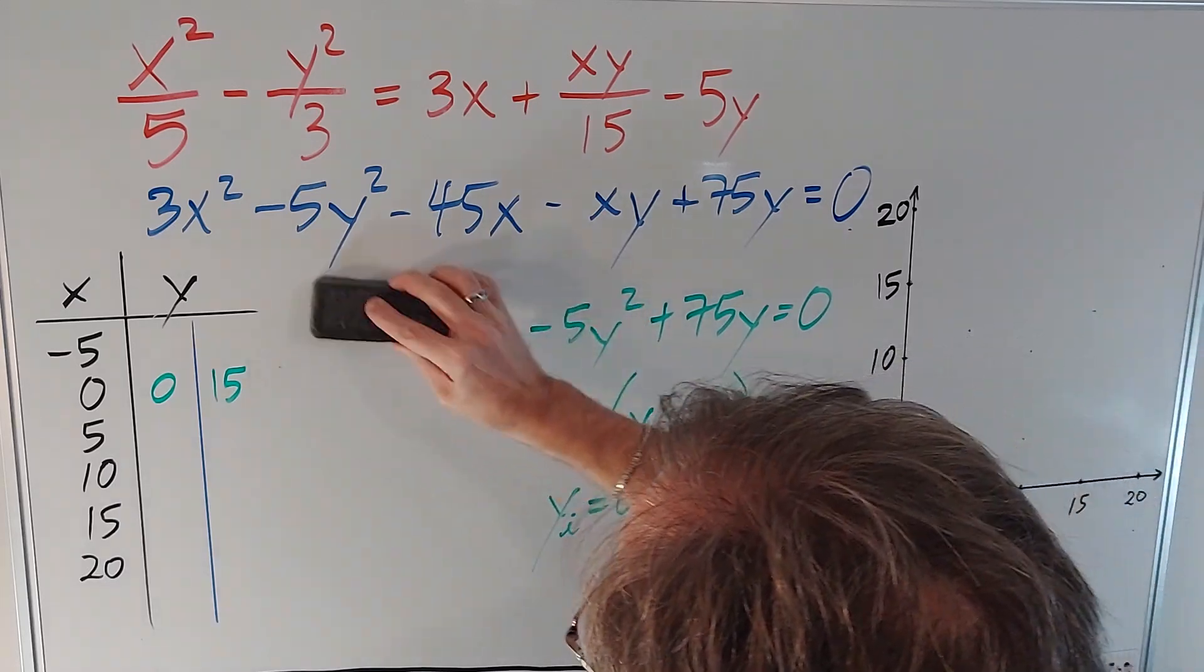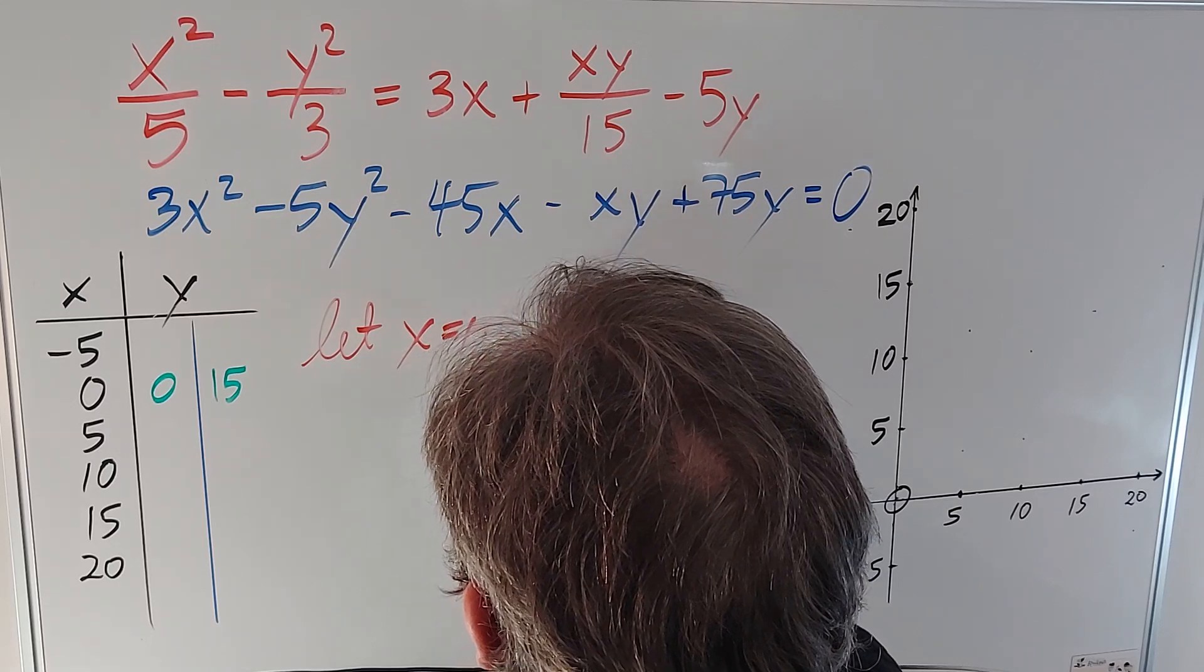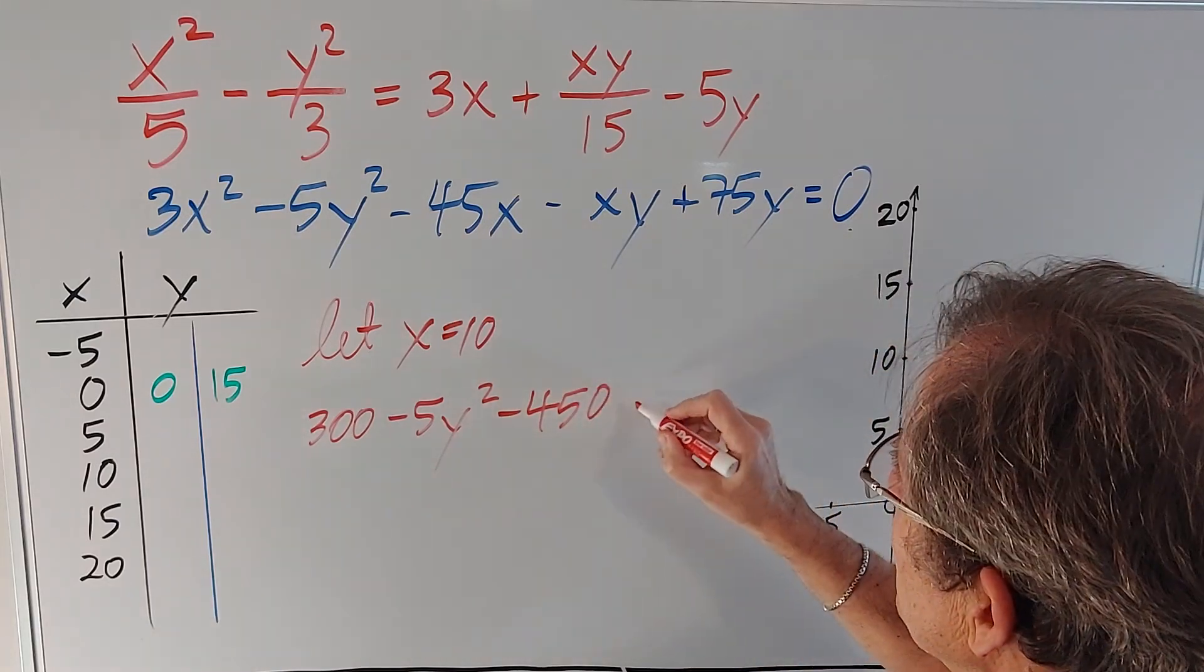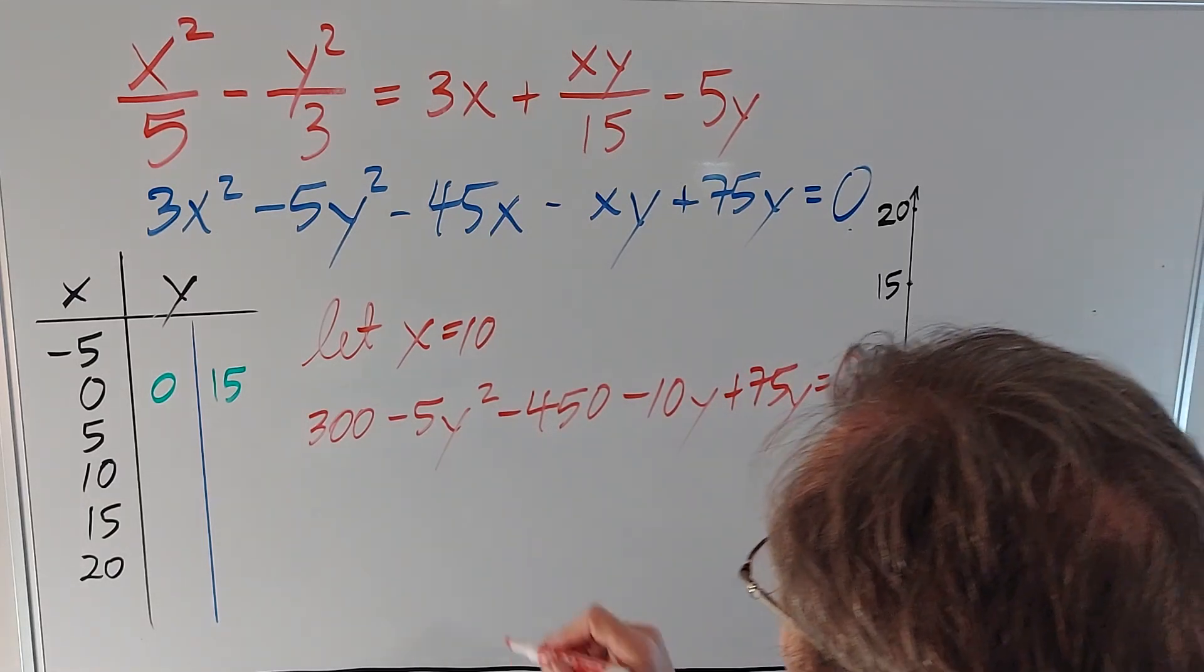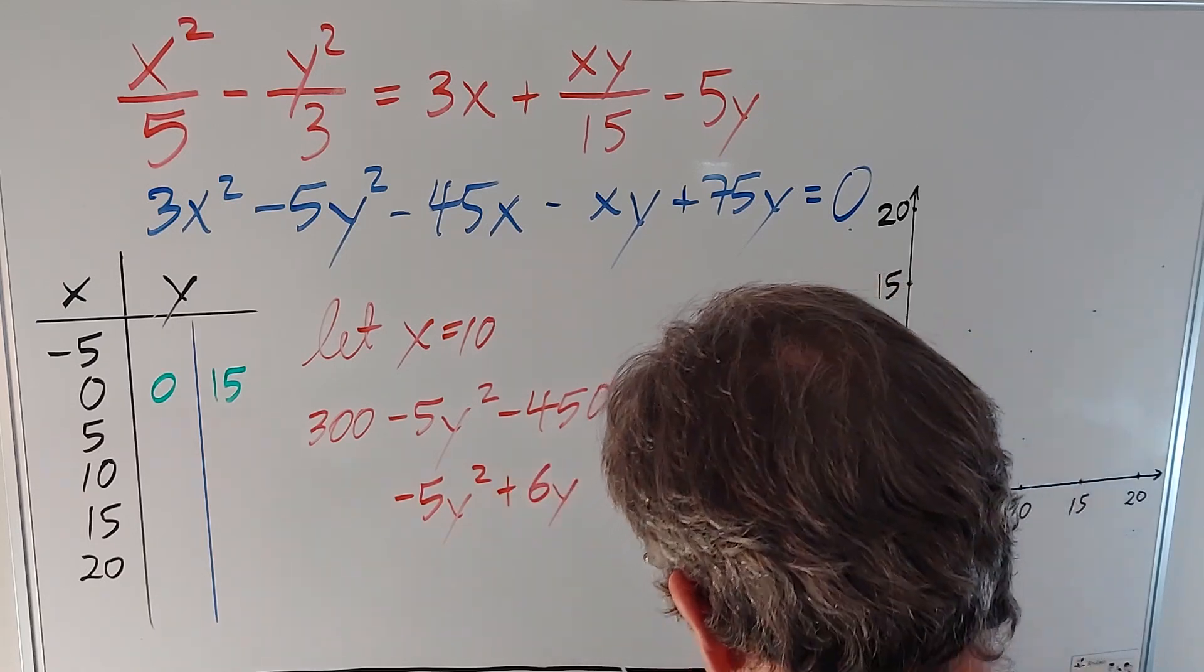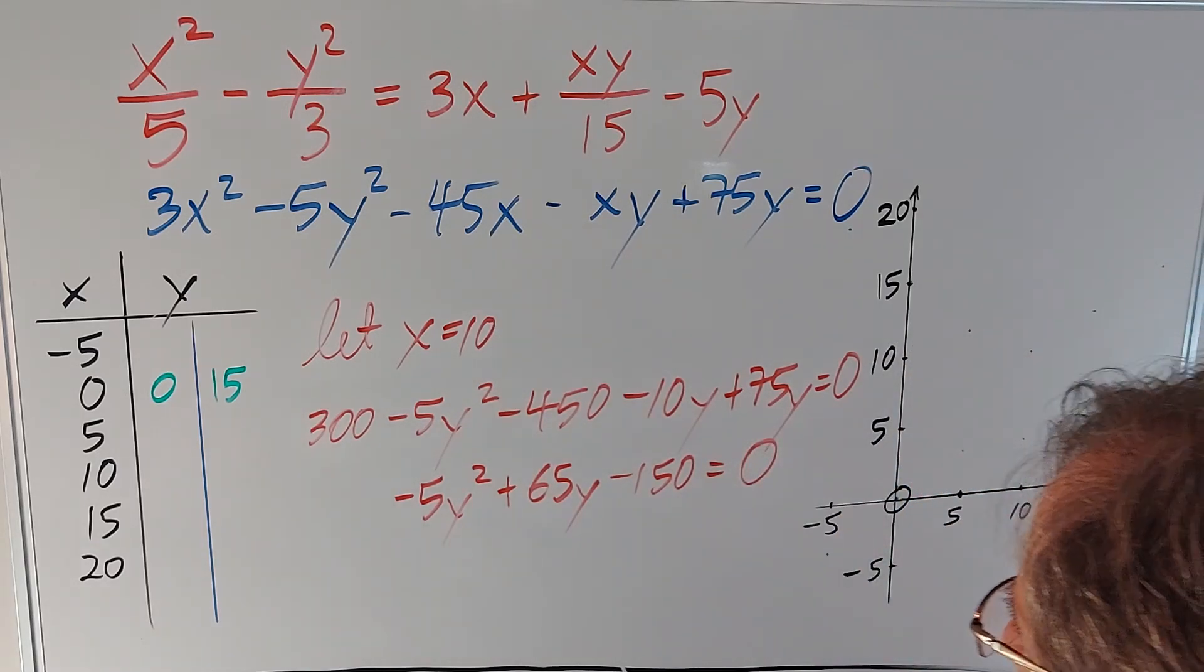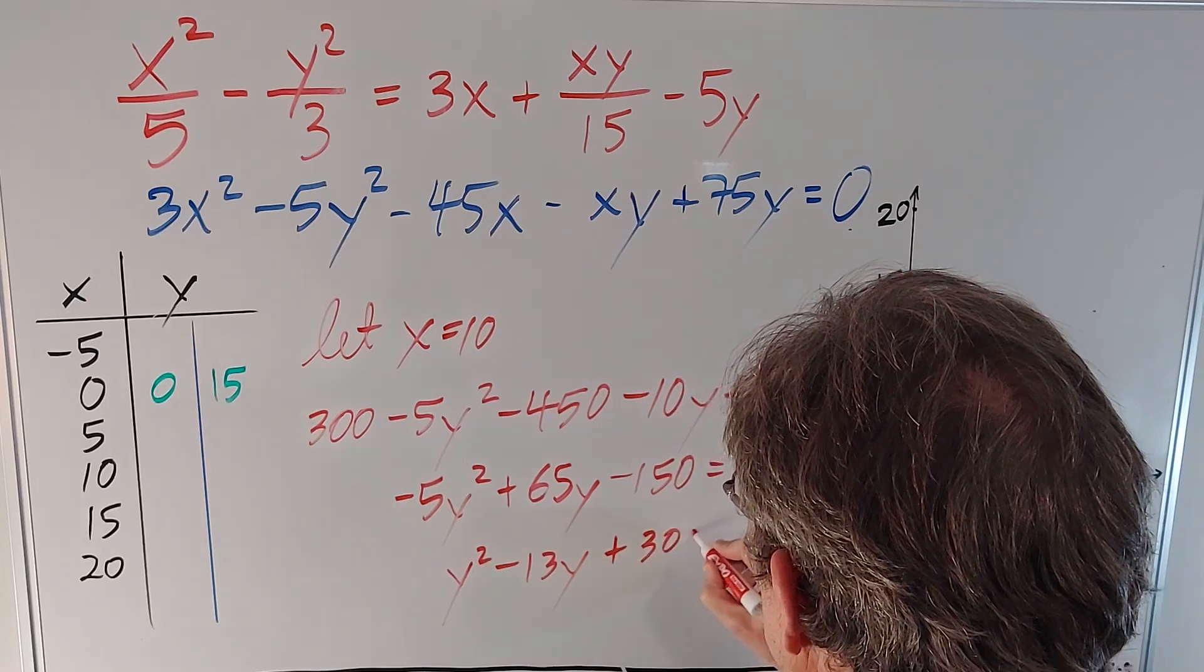Now let's try x equals 10. What does that give me? That gives me 300 - 5y² - 450 - 10y + 75y equals big fat zero. If I combine like terms, I get -5y² + 65y - 150 equals, you got it, big fat zero. Let's divide by negative 5.